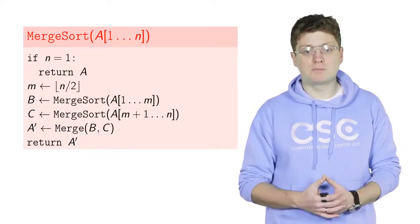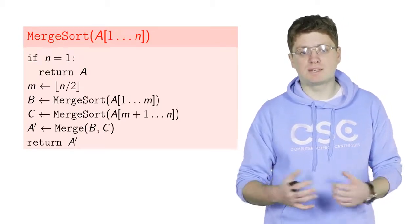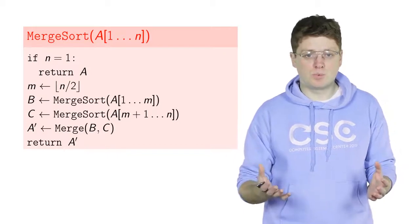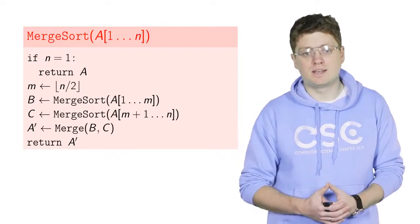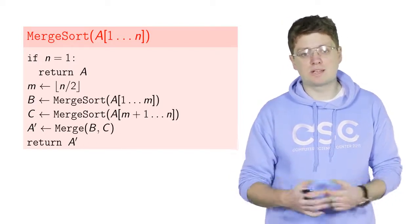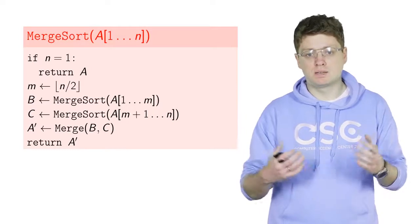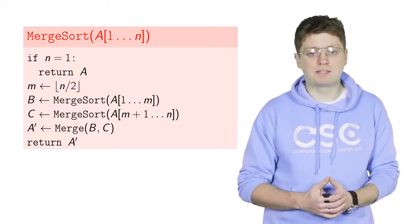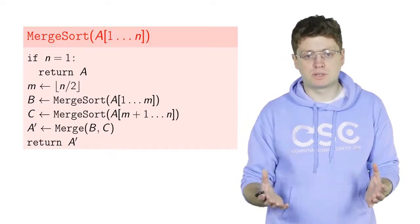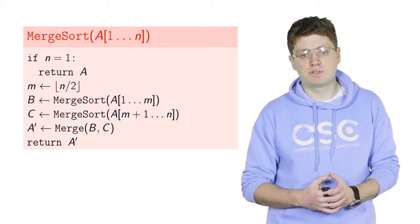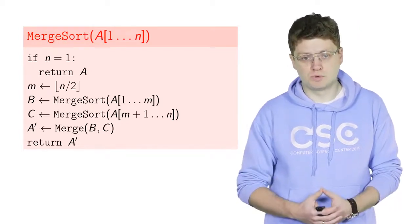The pseudocode of the merge-sort algorithm directly implements this idea. It takes an input array A of size N. If N equals 1, nothing needs to be done and we return A itself. If N is greater than 1, we split array A into two roughly equal parts and sort them recursively, calling them B and C. Then the only thing remaining is to merge these two sorted arrays using the merge procedure, and we return the result.